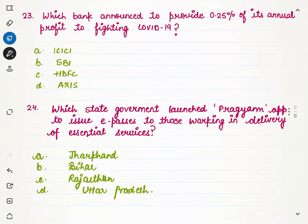Which bank announced to provide 0.25% of its annual profit to COVID-19? In 2020-21, which bank is ready to give 0.25% of its profit to fight COVID-19? The options are ICICI Bank, SBI, HDFC, or Axis Bank. The correct option is SBI. SBI said that in financial year 2020-21, whatever profit they make, 0.25% of that profit will be used to fight COVID-19. These types of questions are commonly asked in bank exams like Bank PO and bank clerk exams.